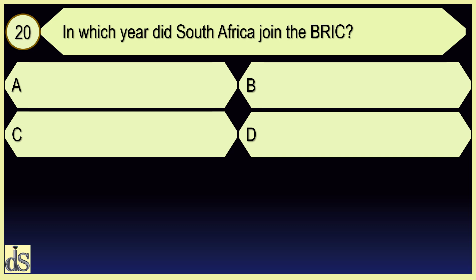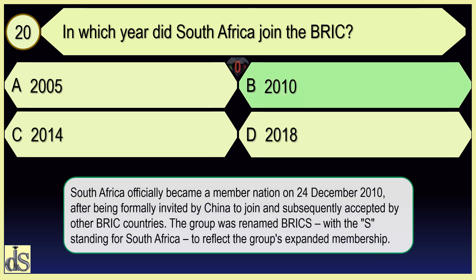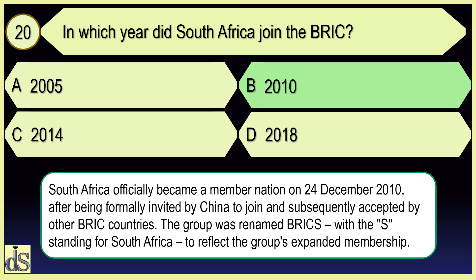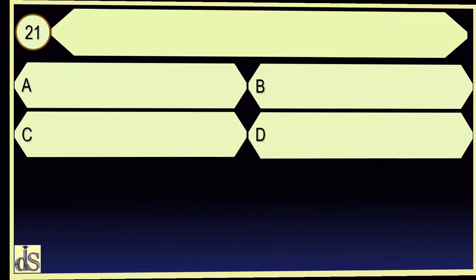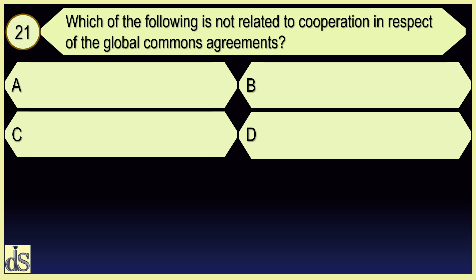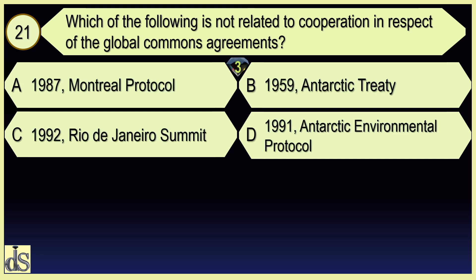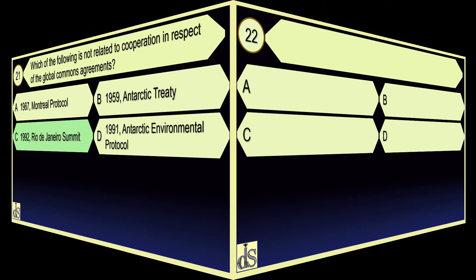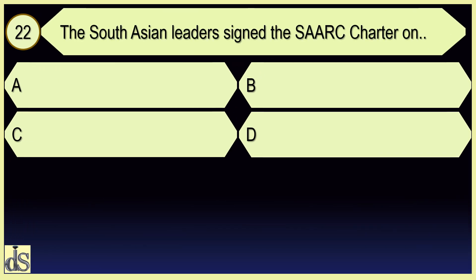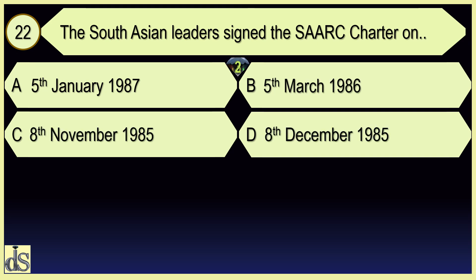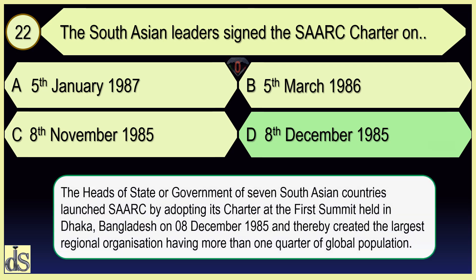In which year did South Africa join the BRIC? 2010. Which of the following is not related to cooperation in respect of the global commons agreements? 1992 Rio de Janeiro Summit. The South Asian leaders signed the SAARC Charter on 8th December 1985.